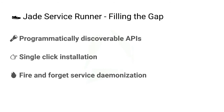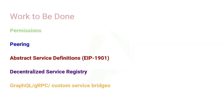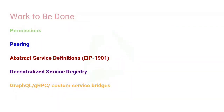To recap, the Jade Service Runner fills the gap by providing programmatically discoverable APIs, single-click installation, and fire-and-forget daemonization of services. The different work that remains includes the permissions layer — I showed you the prompt for allowing a dApp to install or start a service on your machine. That permissioning and identity system still needs to be fleshed out. We also have peering: a network protocol between Jade Service Runners to connect different users to different services. This is particularly useful for networks of sidechains or relayers, making it a single-click installation to join L2 scaling solutions.